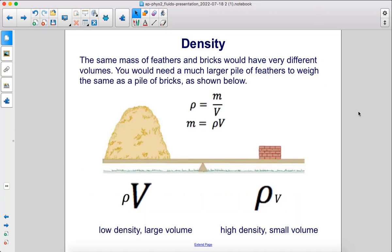The same mass of feathers and bricks would have very different volumes. You would need a much larger pile of feathers to weigh the same as a pile of bricks, as shown below. Density is mass over volume, therefore mass is density times volume. So if you have the same mass of feathers and bricks, you need a large volume because it's a small density, and over here you have a large density, therefore a small volume.